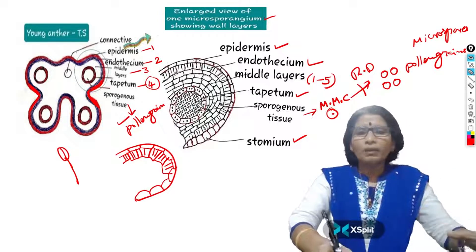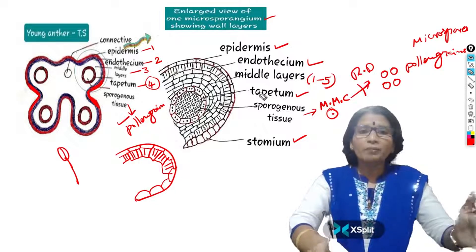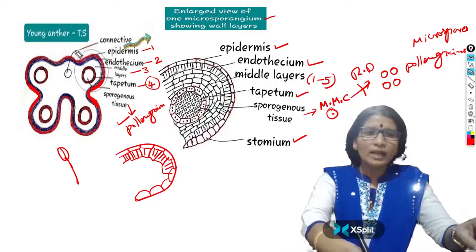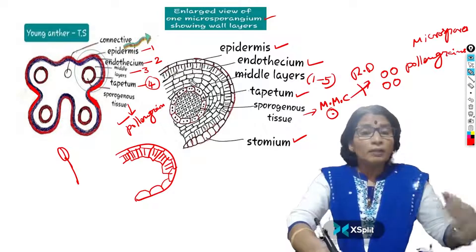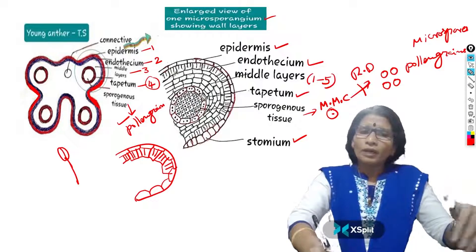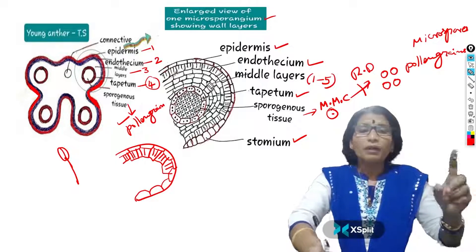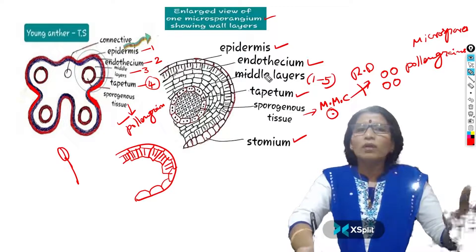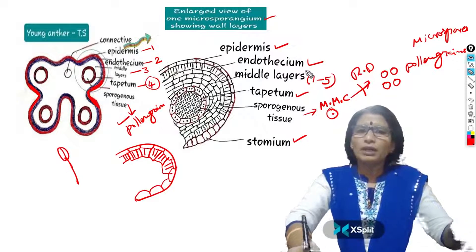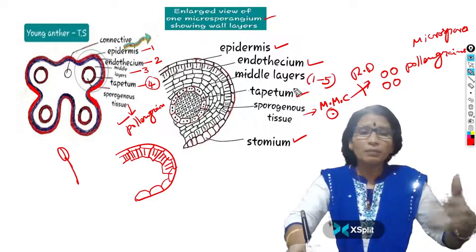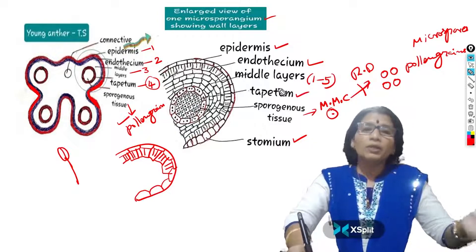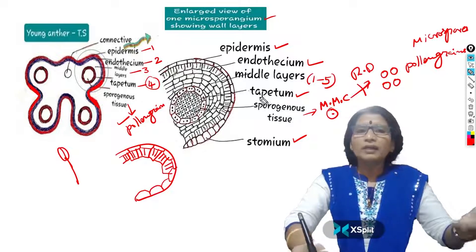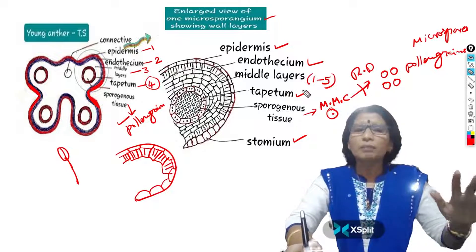After completing the development of pollen grains, the tapetum is completely reduced. So tapetum is present only in the transverse section of a young anther. In a mature anther — where pollen grains are completely developed — when you take a transverse section, you cannot see the tapetum. Only three wall layers are present: epidermis, endothecium, and middle layers. Tapetum is not present because it was reduced by supplying nutrients to the developing pollen grains.